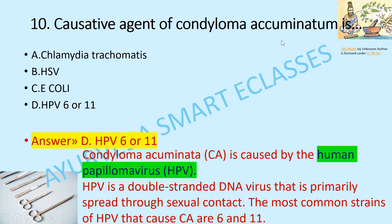The causative agent of Condyloma acuminatum is human papillomavirus (HPV). HPV is a double-stranded DNA virus that is primarily spread through sexual contact. The most common strains of HPV that cause condyloma acuminatum are types 6 and 11.